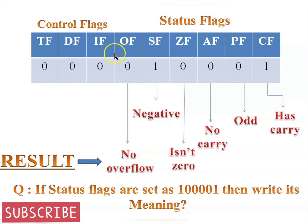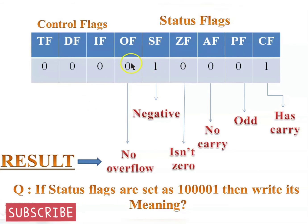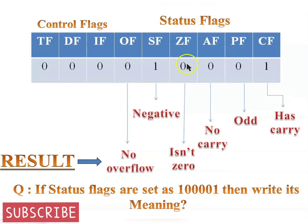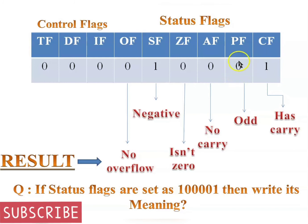Assume that a flag register is set after an addition of two numbers. There was no overflow, so the overflow flag is zero. The result is negative, so the sign flag is one. The answer is not zero, so the zero flag is zero. There was no auxiliary carry, so the auxiliary carry flag is zero. The answer is an odd number, so the parity flag is zero. The answer has a carry, so the carry flag is one.